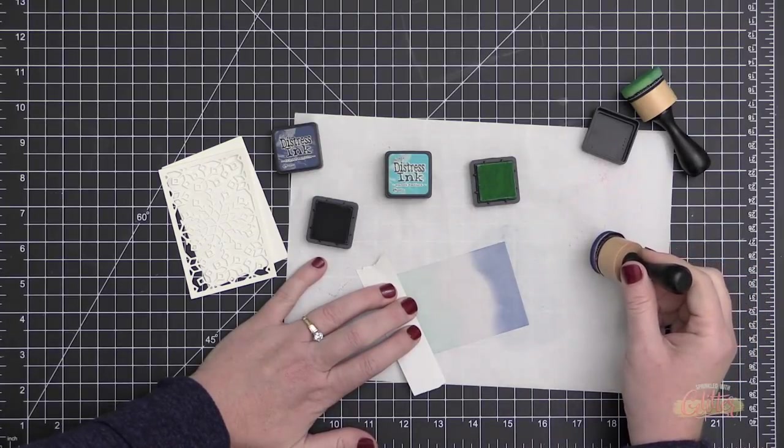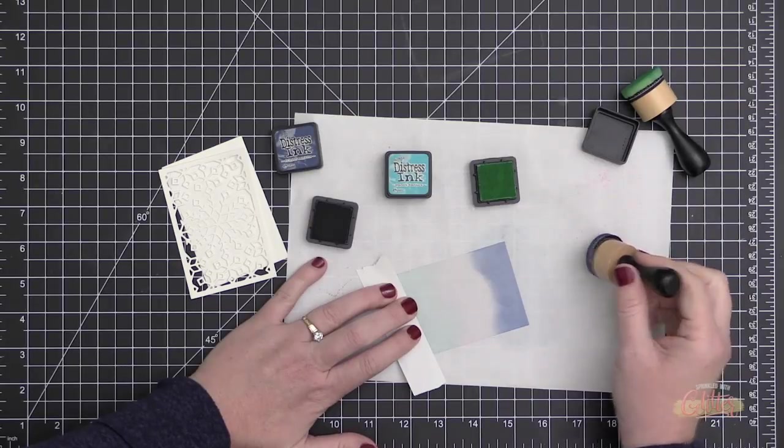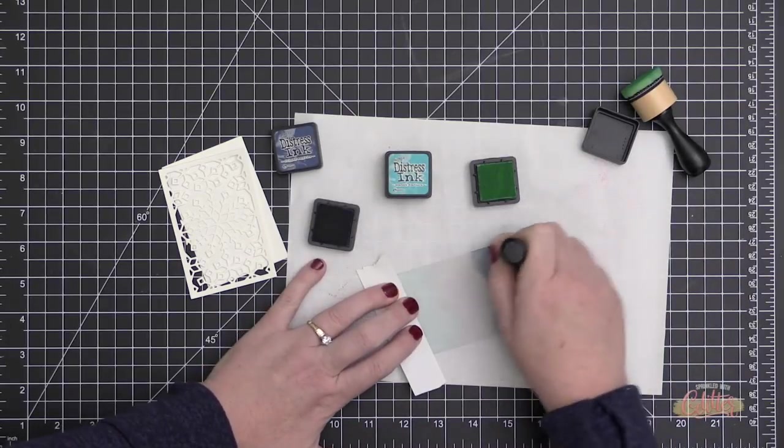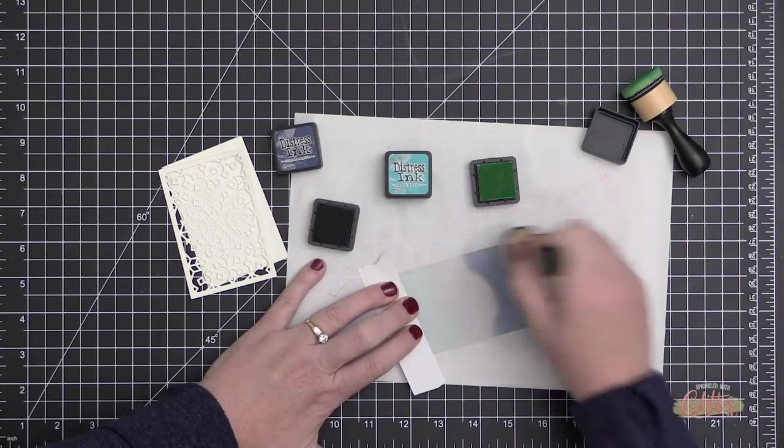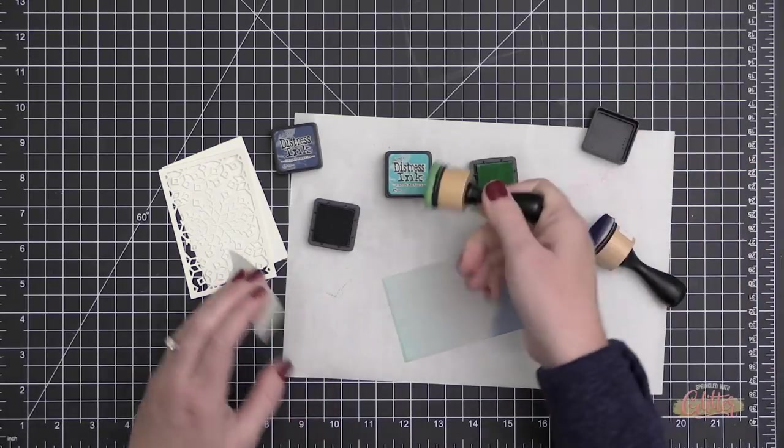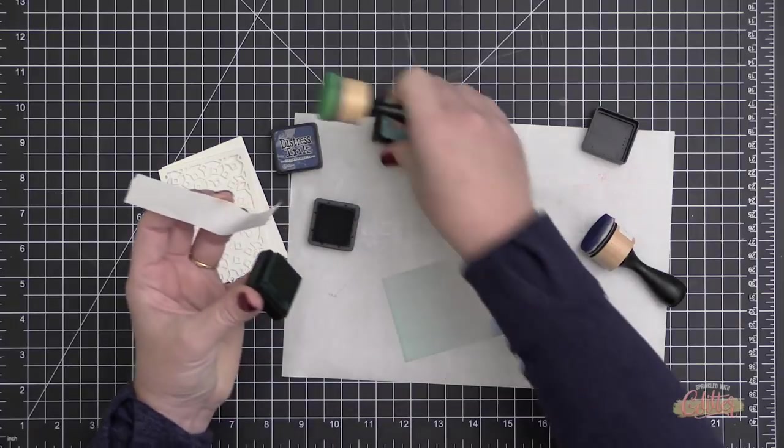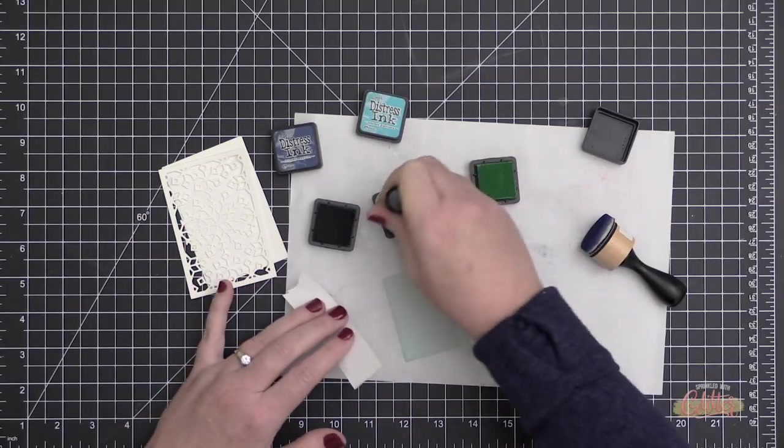Then through the middle I'm going to blend some Peacock Feathers. Now because vellum is a nice slick surface, it moves really easily, and for that reason you can quickly overtake one color with another.